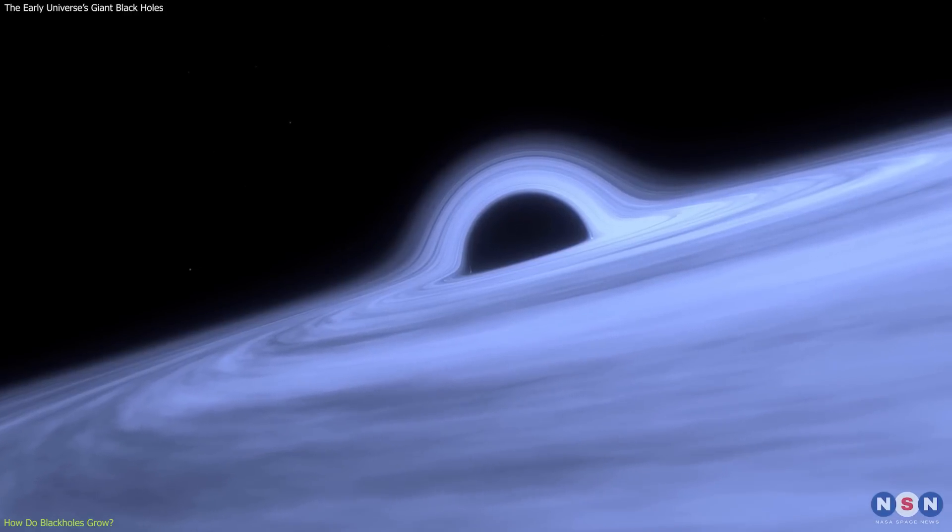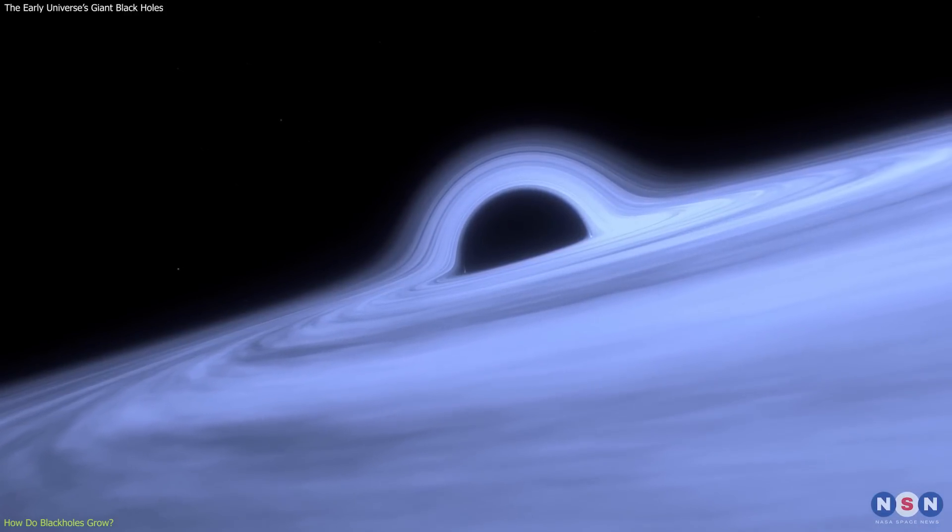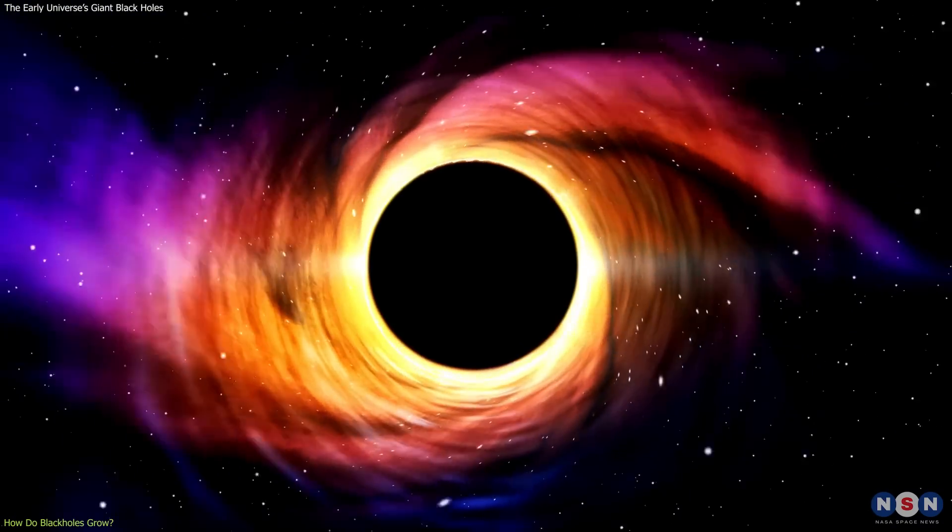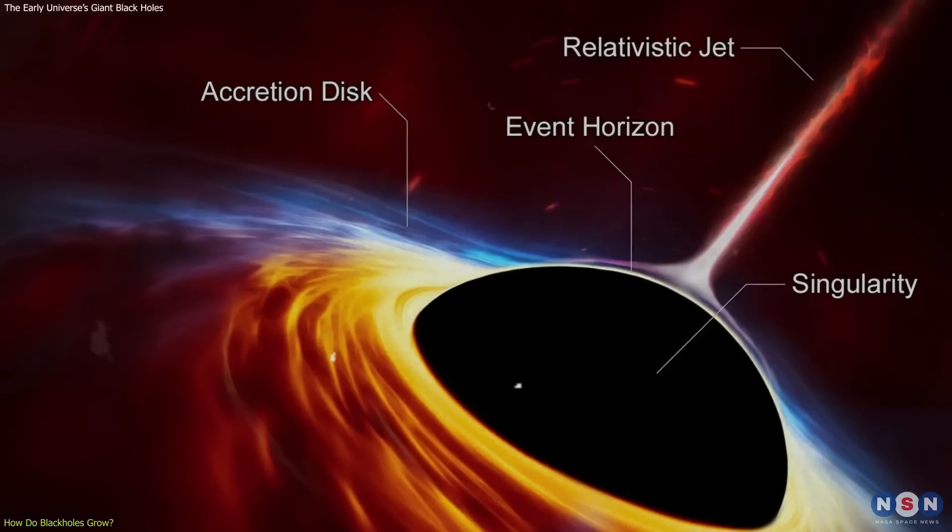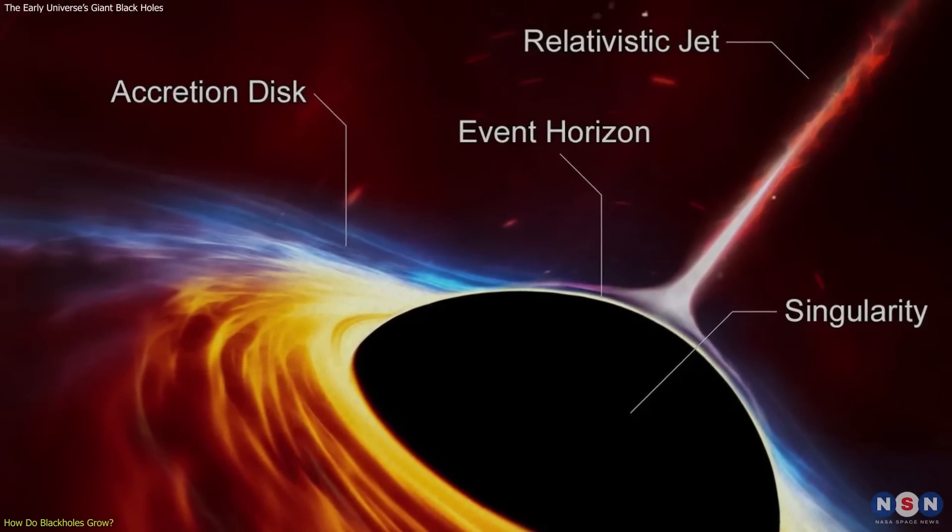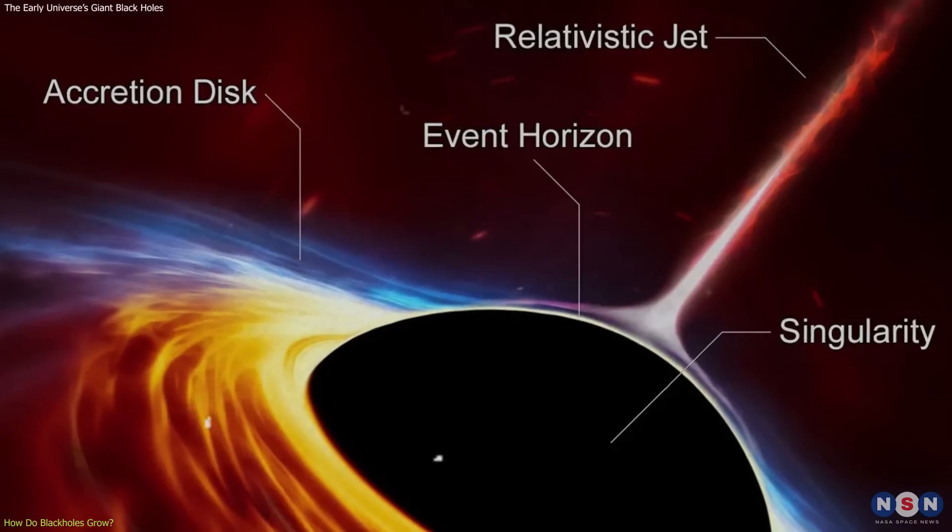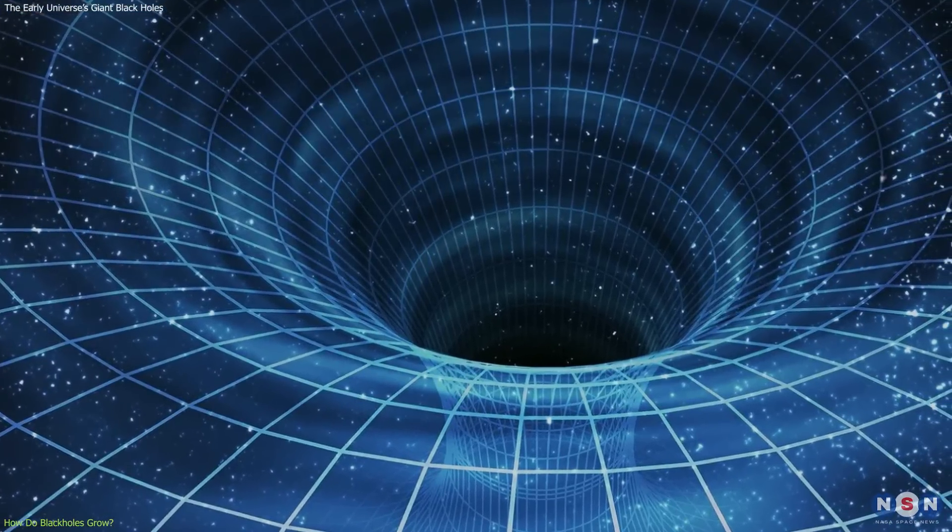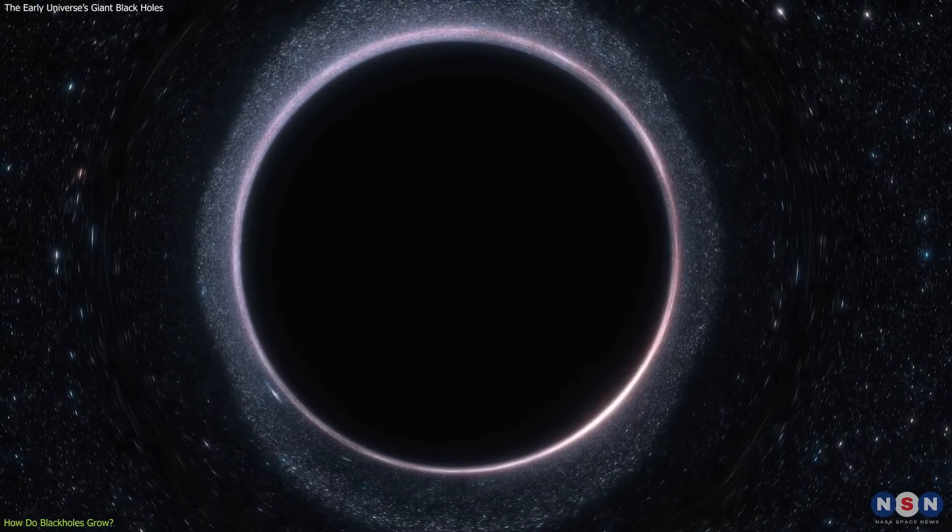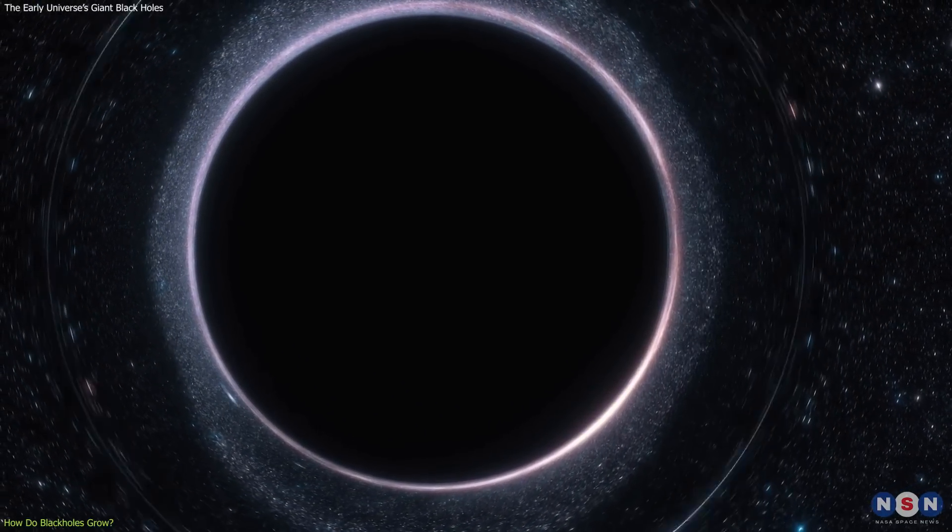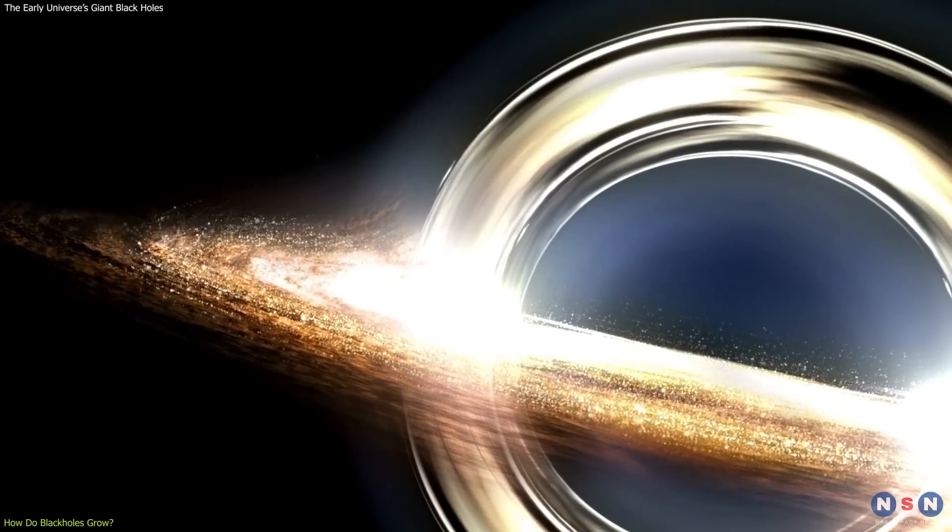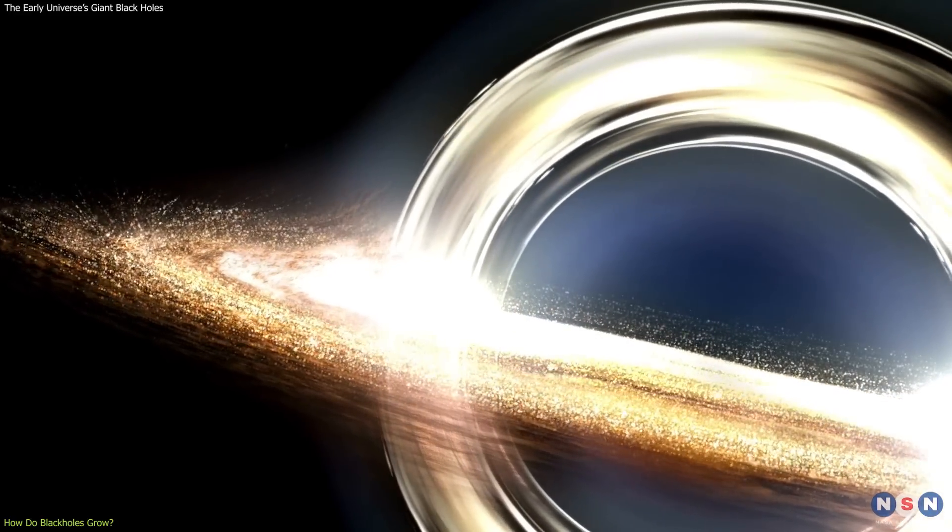A black hole is an extremely dense object from which nothing can escape, not even light. It has a point of no return called the event horizon, which marks the boundary between the inside and the outside of the black hole. Anything that crosses the event horizon is doomed to fall into the singularity, which is the center of the black hole where all matter and energy are compressed to a point of infinite density and zero volume.